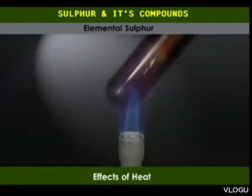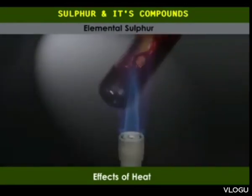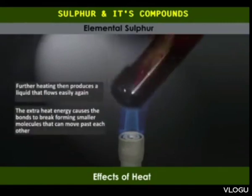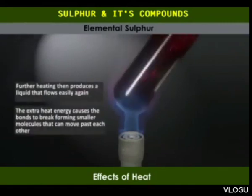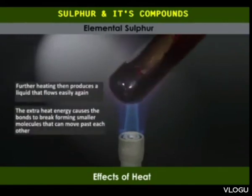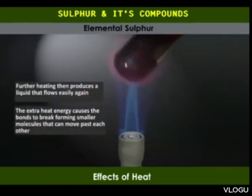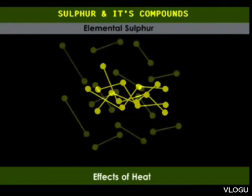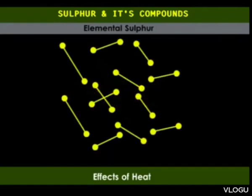As heating continues, the liquid becomes black and flows easily once again. This is because more covalent bonds break, resulting in smaller molecules which are less entangled. This makes the liquid less viscous.